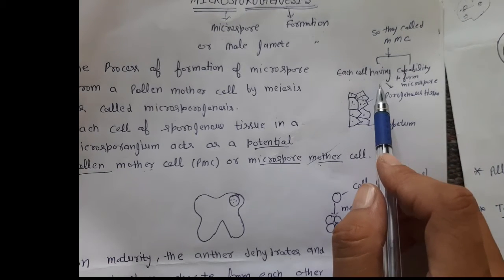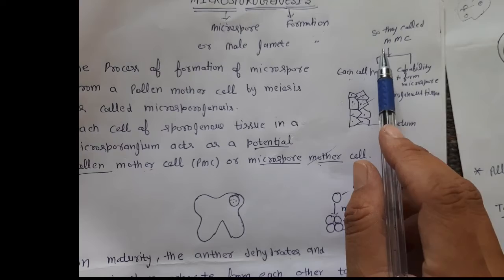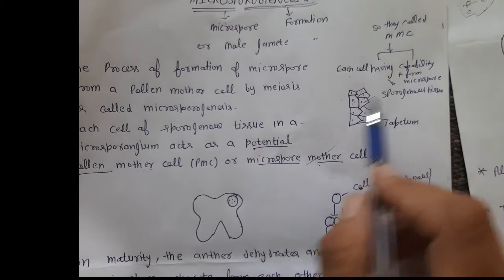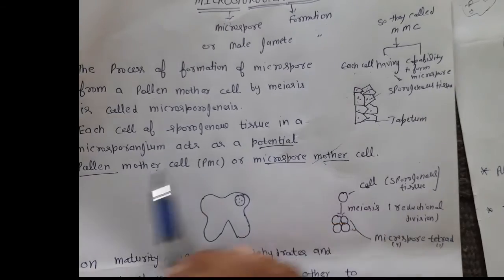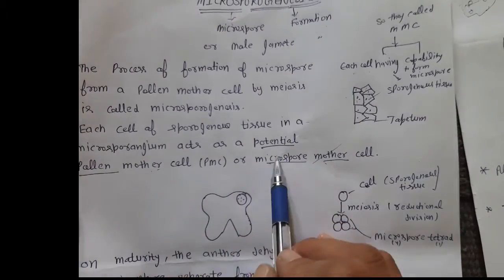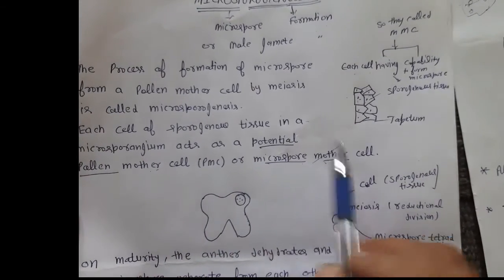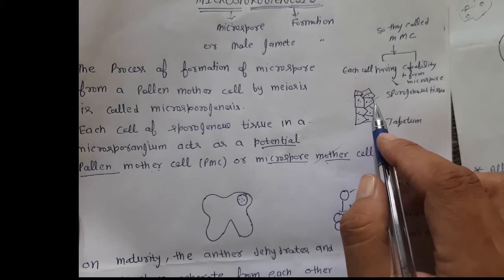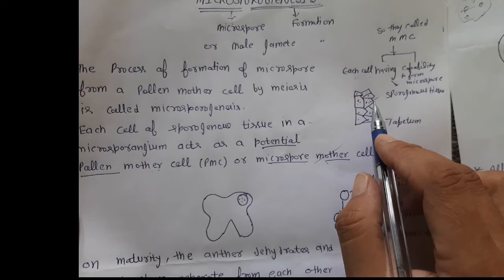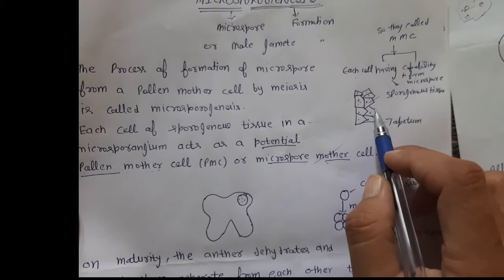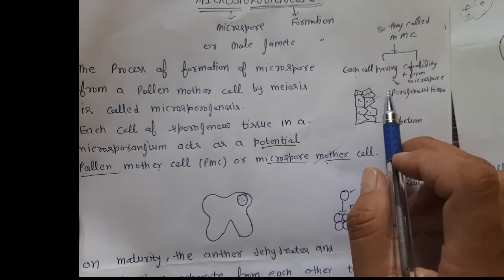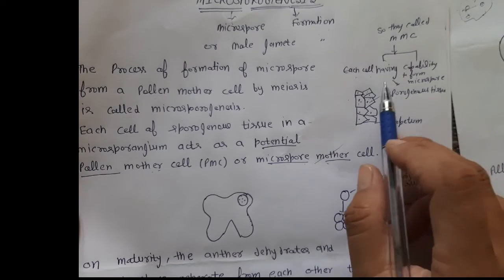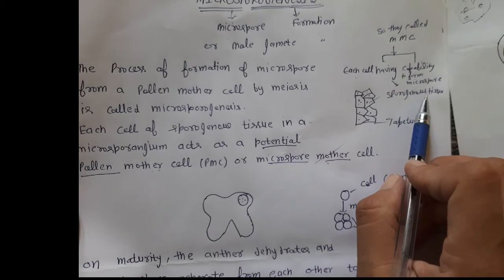The sporogenous tissue cells are called MMC — microspore mother cells — or PMC — pollen mother cells. Tapetum, remember, was the layer that provided nourishment. Every cell of the sporogenous tissue has the capability to form microspores.